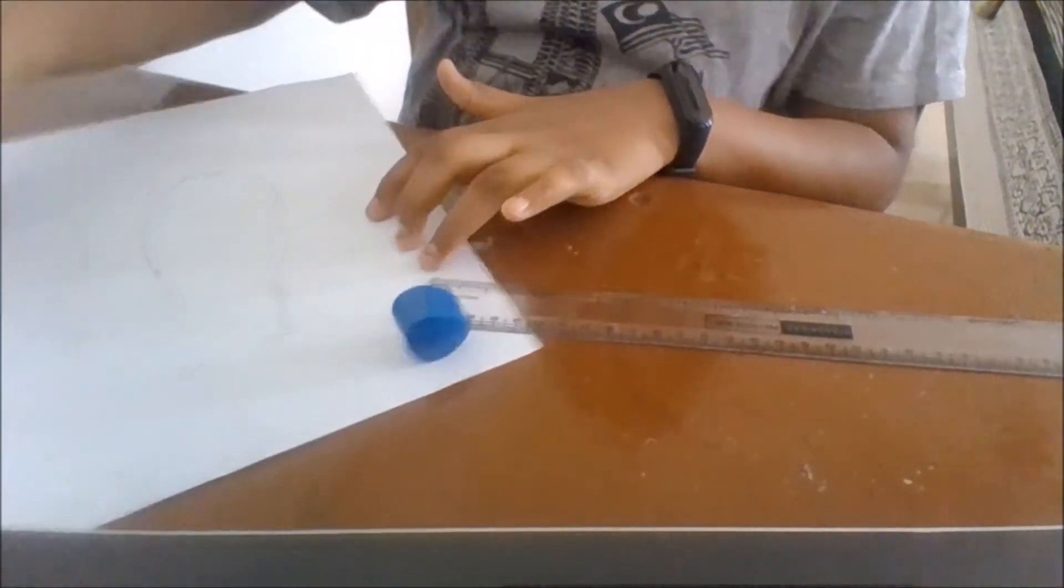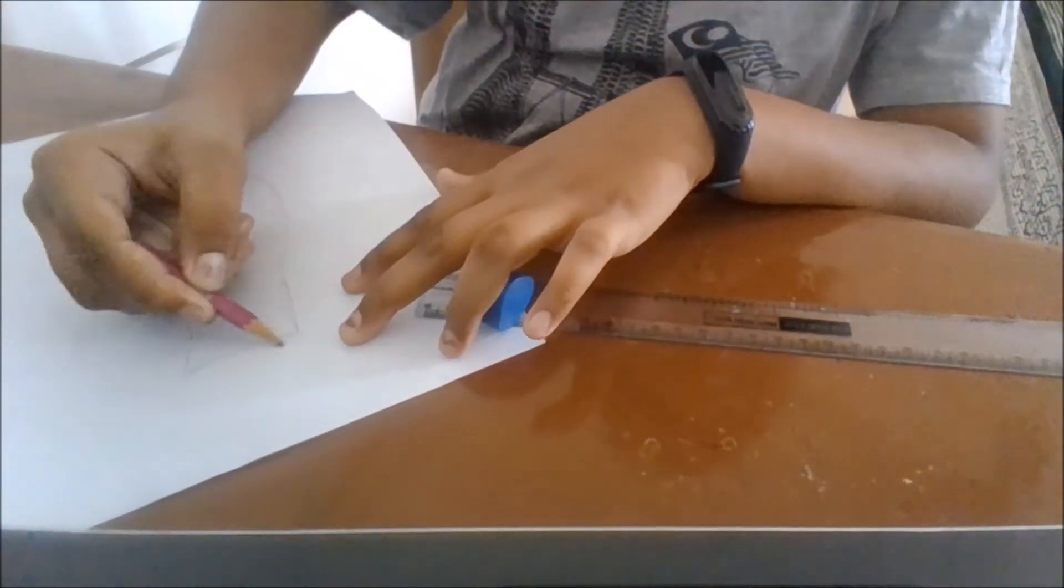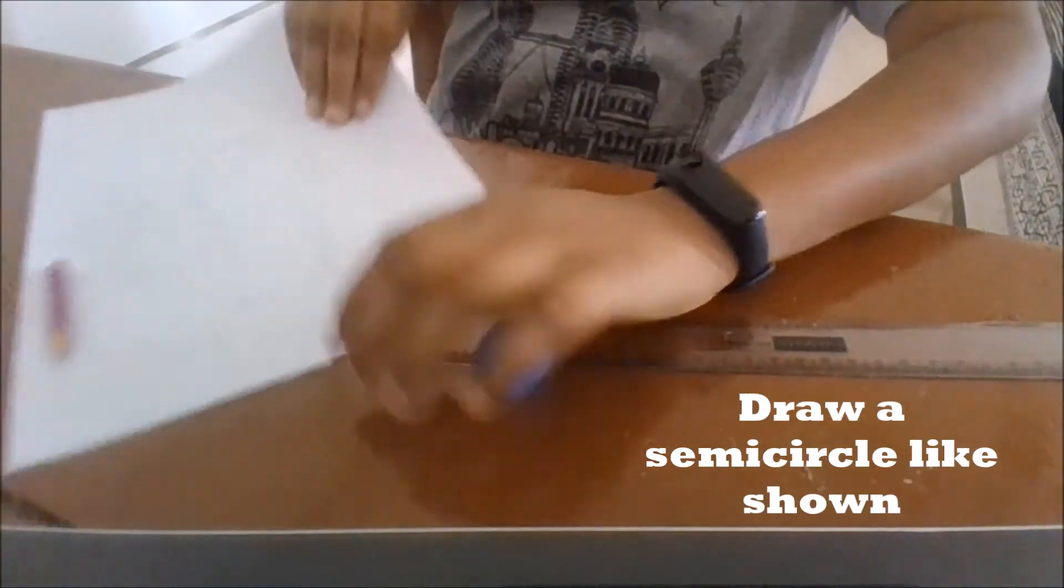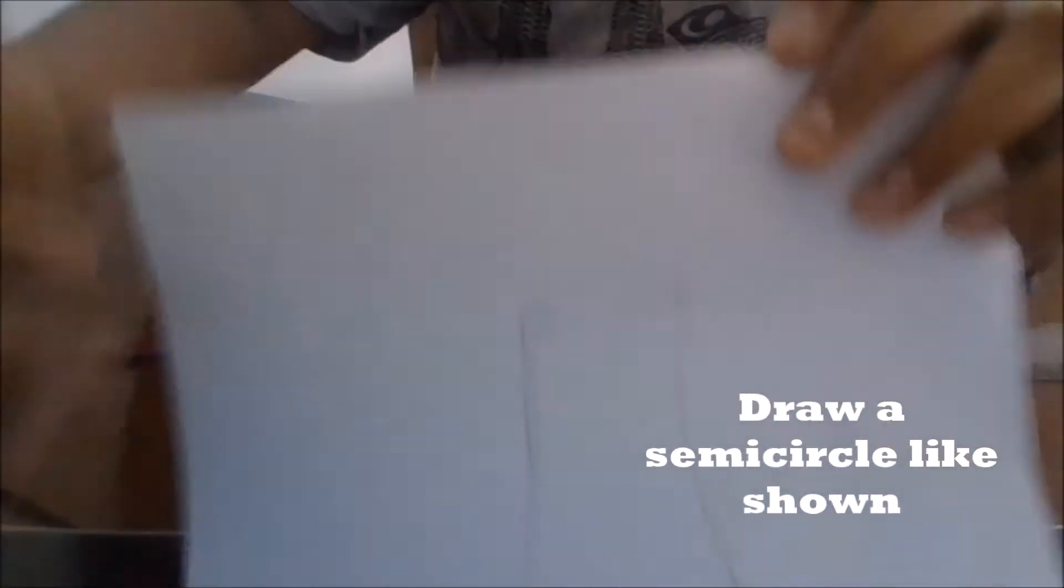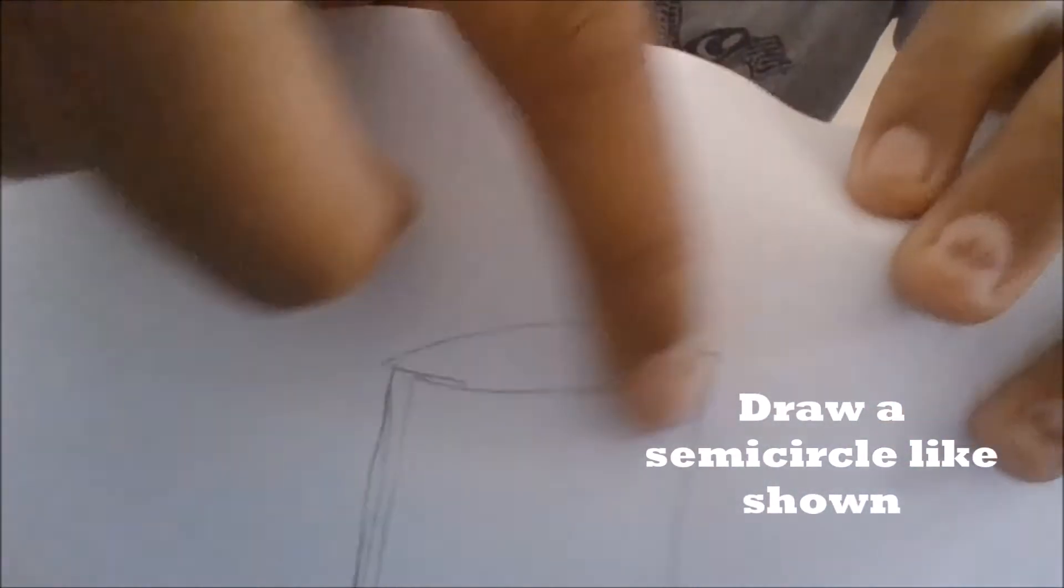Now you want to draw a semicircle line on top of the pot like shown here. This is how you should draw a semicircle line over here.